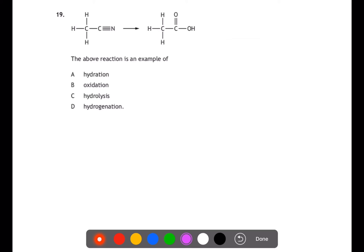Question 19. The above reaction is an example of what? These are four types of reaction that you're expected to be familiar with. Hydration is where you would add water. We've not added water on here. Oxidation is where you would increase the oxygen to hydrogen ratio. We haven't done that either. Hydrolysis is where you would split something up using water, and the water would add on to the two different new molecules. And hydrogenation is where you would add hydrogen. This is a very useful reaction where you can turn a nitrile into a carboxylic acid and is an example of hydrolysis.